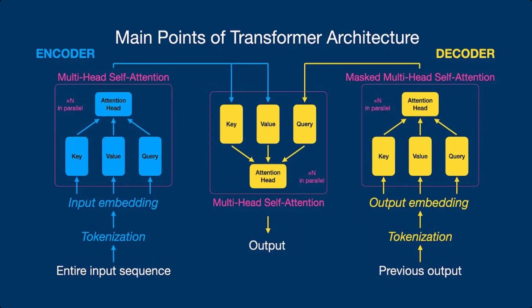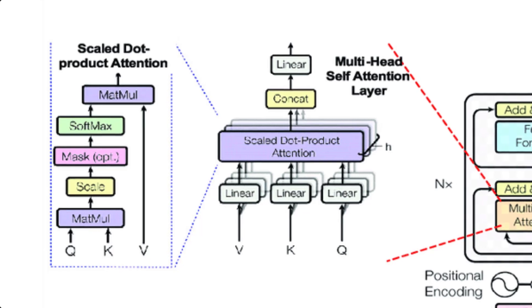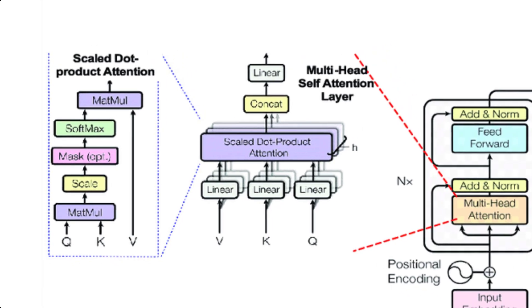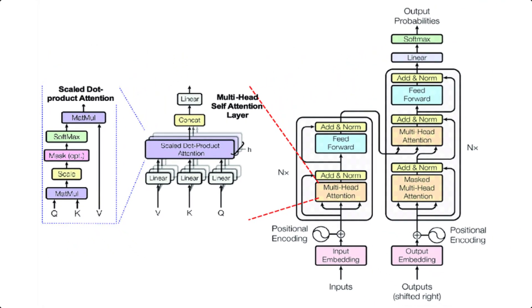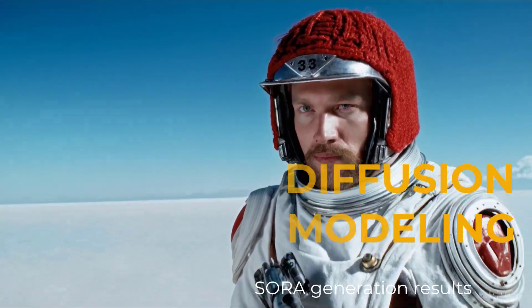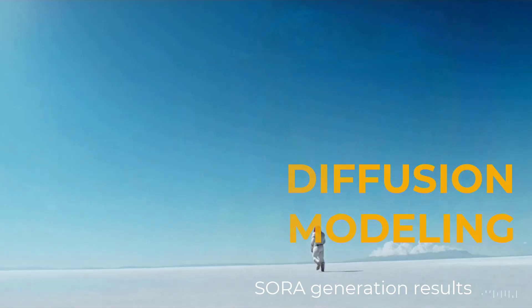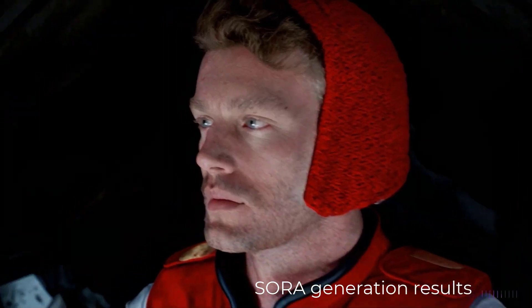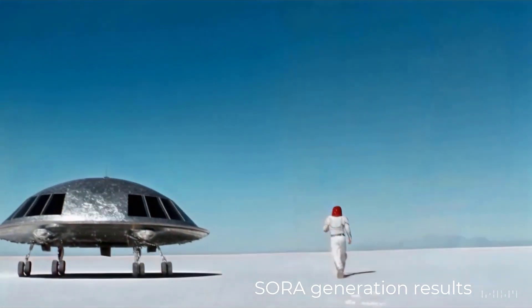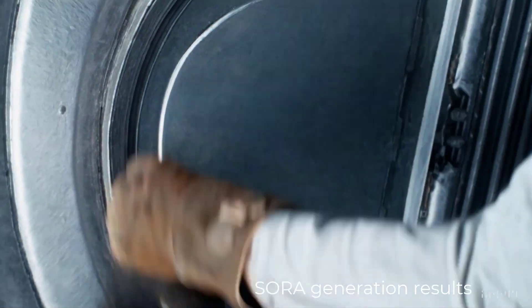Driven by transformer architecture, Sora processes visual data through space-time patches, translating raw videos into compressed latent representations. This transformative approach empowers Sora to generate high-fidelity videos of up to a minute in duration, meticulously encapsulating varied visual elements with unparalleled precision.